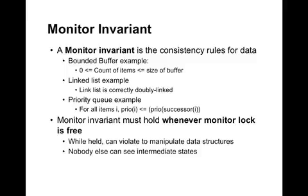Another thing about using monitors is something called a monitor invariant. This is basically the consistency rules for the data. Any data structure has some rules on what it means to be correct. In the bounded buffer example, it means that the count of items should be between zero and the size of the buffer. In a doubly linked list, you might want to say that the list is completely connected in both forwards and backwards directions. In a priority queue, you might want to say that the priority of an item must be less than or equal to the priority of its successor. The rule of monitors is that this invariant must hold whenever the monitor lock is free — whenever no thread is inside the monitor. While the lock is held, you can violate these invariants to manipulate the data structures, for example while inserting into a linked list or priority queue. By the time the thread releases the lock, it must make sure the invariant holds. This means any thread entering the monitor can always assume at the top of a procedure that the invariant holds, such as the linked list is correctly formed.